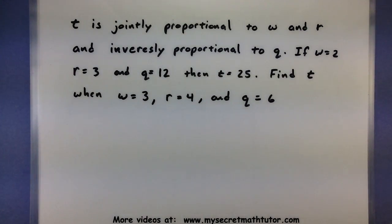This one says t is jointly proportional to w and r, and inversely proportional to q. If w equals 2, r equals 3, and q equals 12, then t is equal to 25. Find t when w equals 3, r equals 4, and q equals 6.